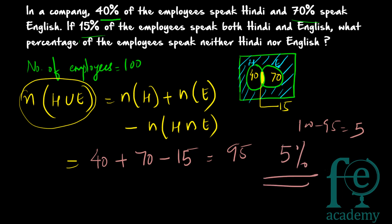So 5 out of 100, meaning 5% of employees neither speak Hindi nor English. For percentage questions, you just assume the number of people equals 100, and your final answer will also be in percentage. Thank you for watching.